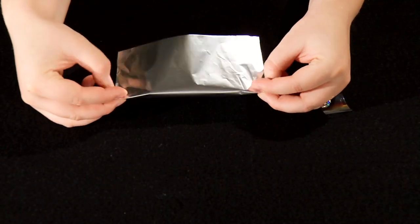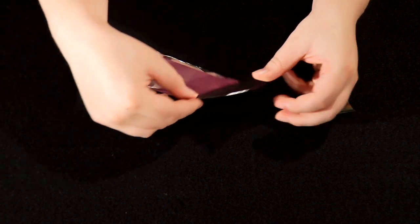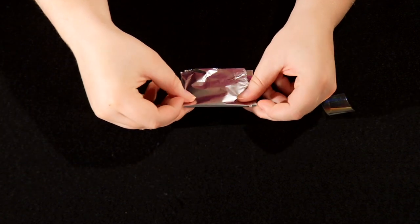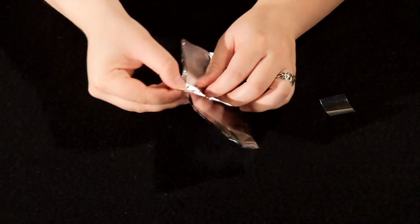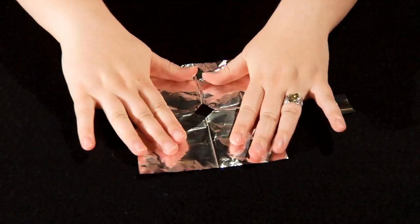We will start by constructing the end that goes up to your eye. For this end you will need one of the aluminum foil squares. Fold it into quarters and cut off the corner where all the folds meet. This gives us a hole in the middle of the piece of foil when everything is unfolded.